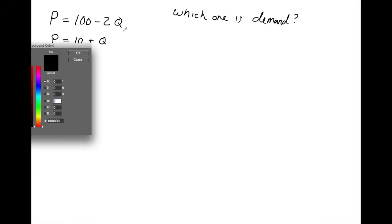What your first step would be is trying to figure out which one is demand and which one is supply. So we start off with trying to figure out which one is demand. What we do know is that demand is downward sloping.